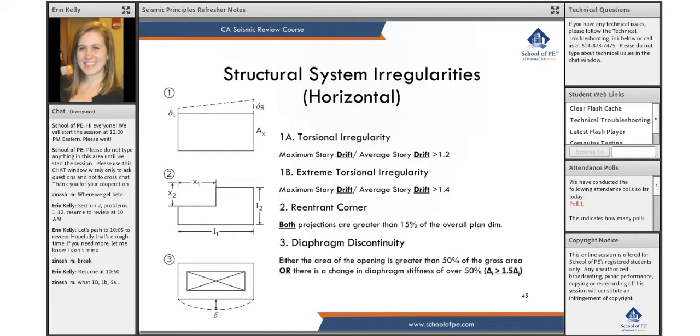So let's talk about horizontal irregularity type one, 1A and 1B. This irregularity occurs when the maximum story drift - I've highlighted drift here - so your maximum story drift to your average story drift.